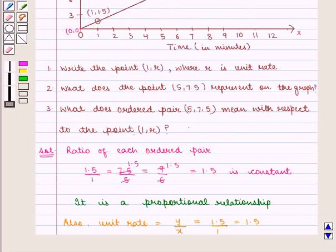Next, we shall see what does the ordered pair (5, 7.5) mean with respect to the point (1, R).